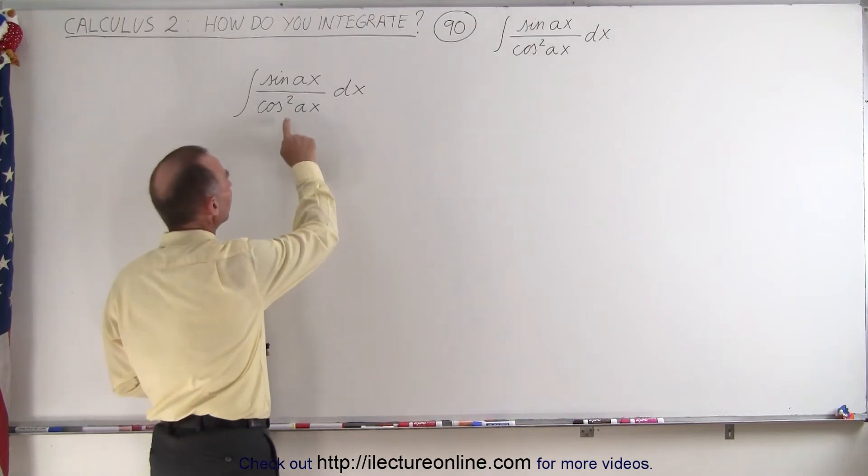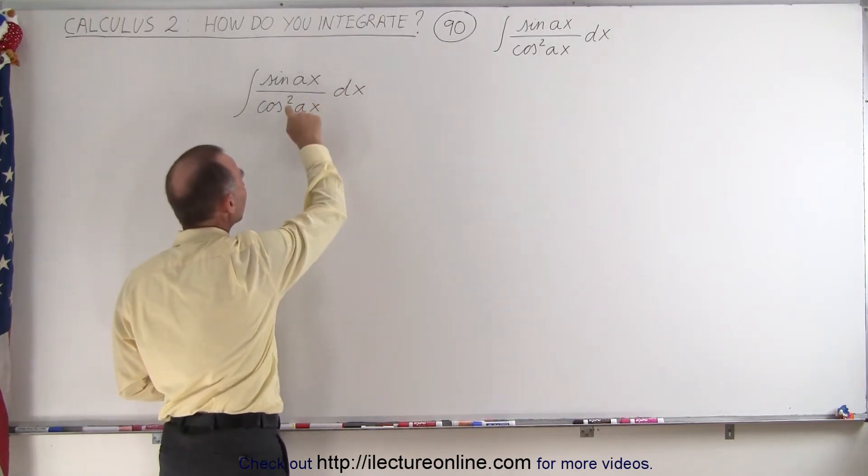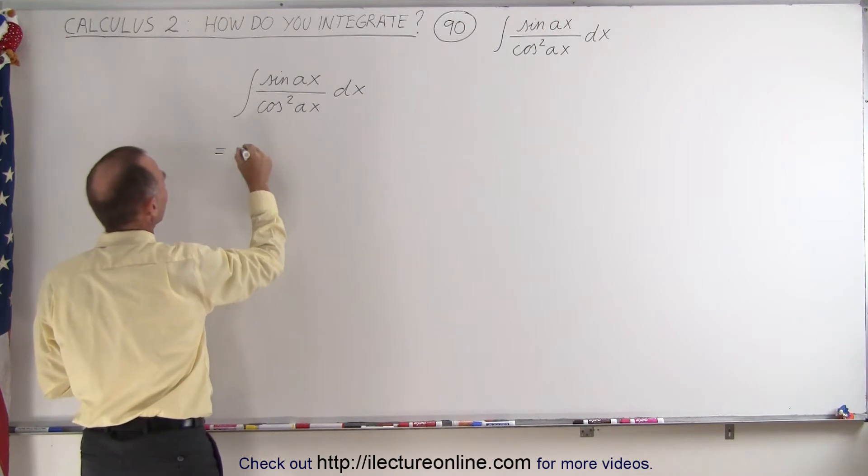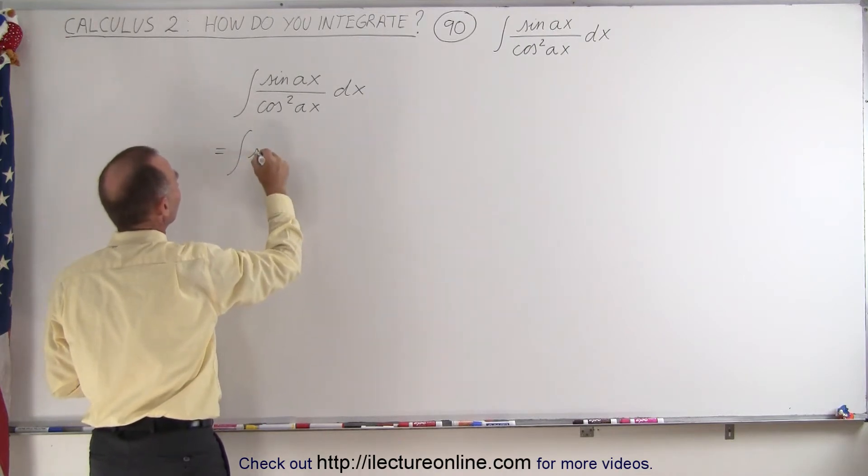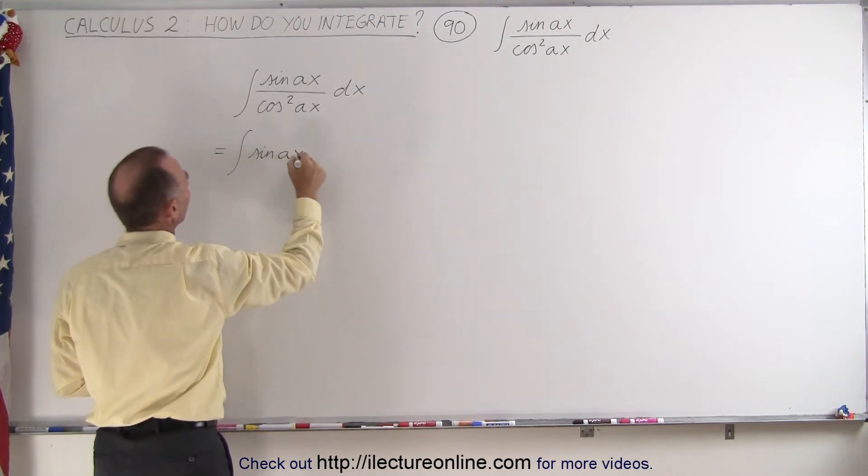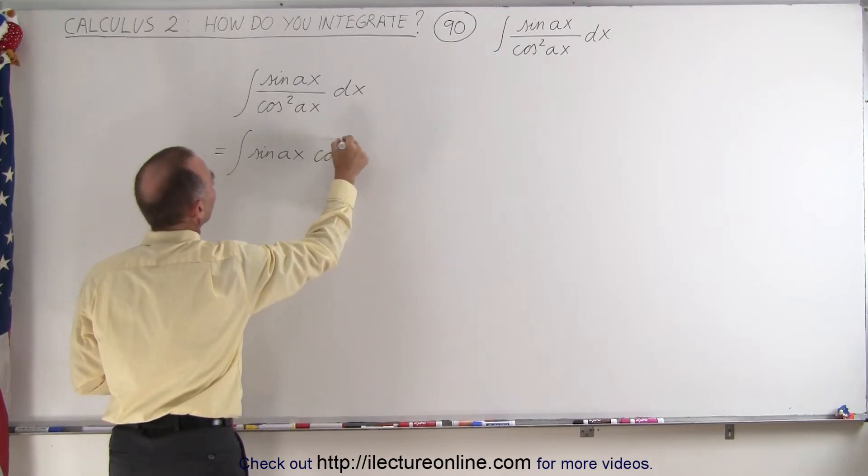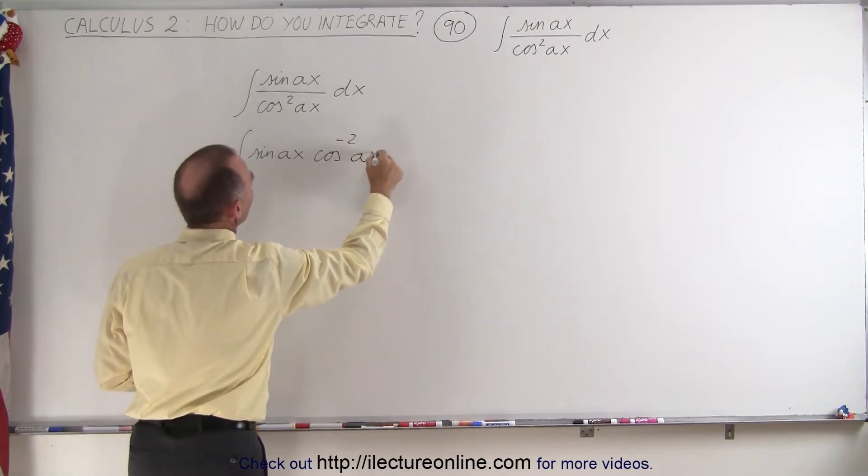All we need to do is take the denominator and write it in the numerator with a negative exponent. So let's do that. This is equal to the integral of the sine of Ax times the cosine to the negative two power of Ax dx.